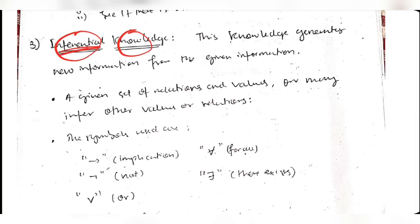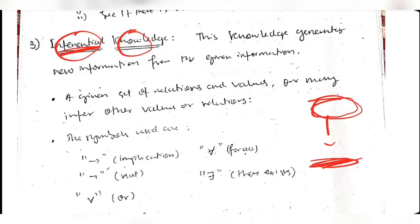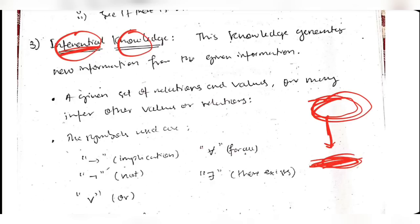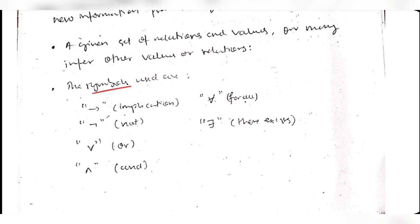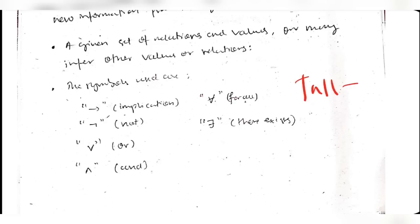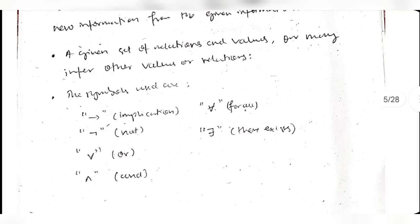The third scheme is inferential knowledge - inferencing means drawing conclusions from observations. For example, if there are black clouds in the sky, you infer it might rain. Using symbols like implication (→), negation (¬), OR (∨), AND (∧), for all (∀), and there exists (∃), you can infer results. For example, if a person is tall, you can infer they can climb a tree.